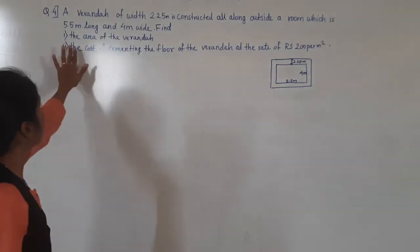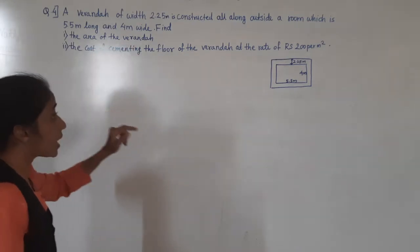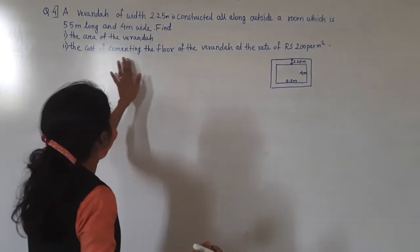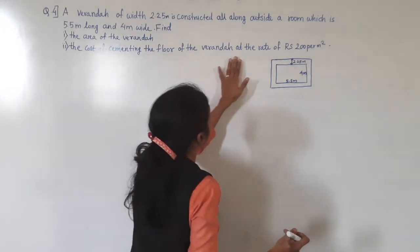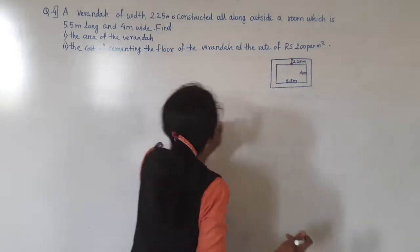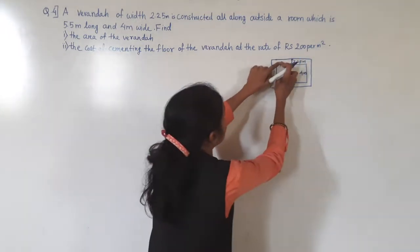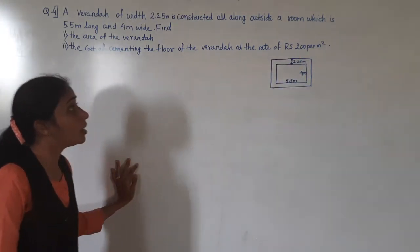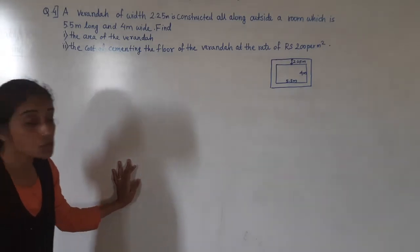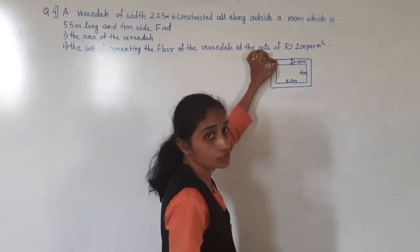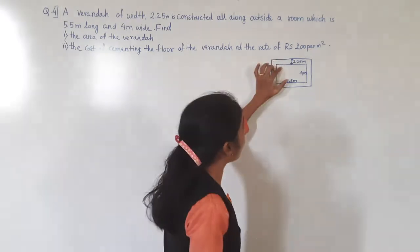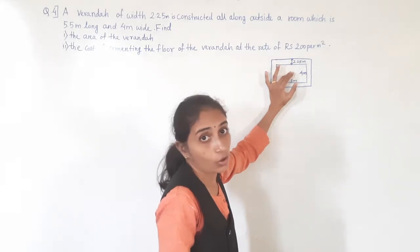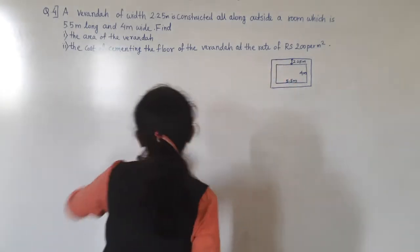So what is asked: find the area of the veranda, and the cost of cementing the floor of the veranda at the rate of rupees 200 per meter square. To find the area of the veranda, first we should know the area of the room.